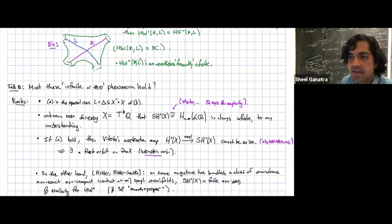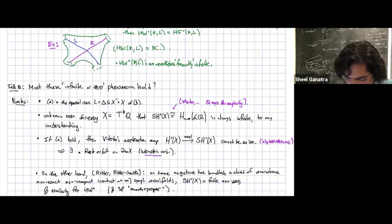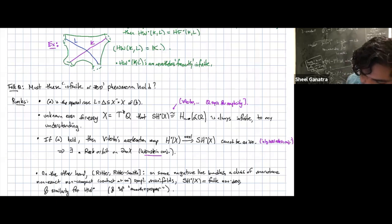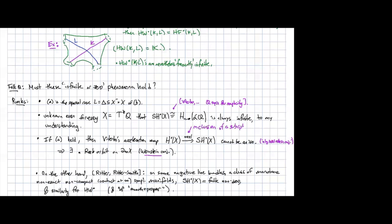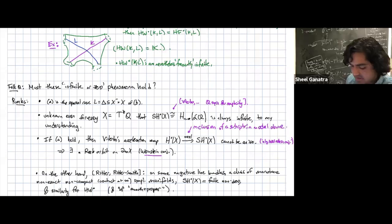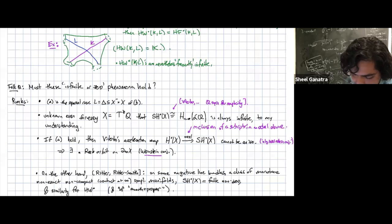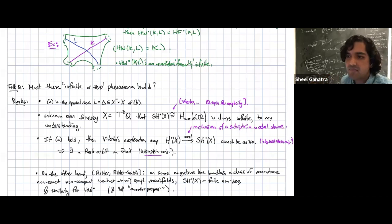Another sense in which this is poking at something hard is: if this infinite-or-zero phenomenon held, then the acceleration map from ordinary cohomology to symplectic cohomology — which you can think of as inclusion of a subcomplex in the model above — can't be an isomorphism. This is a form of what's called the algebraic Weinstein conjecture, introduced by Viterbo. This of course implies the usual Weinstein conjecture on the existence of a Reeb orbit at infinity, which in this level of generality is unknown.